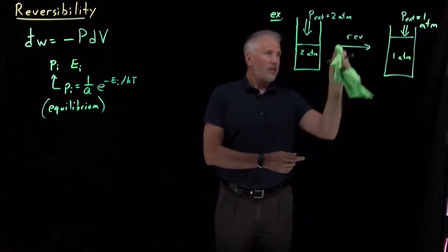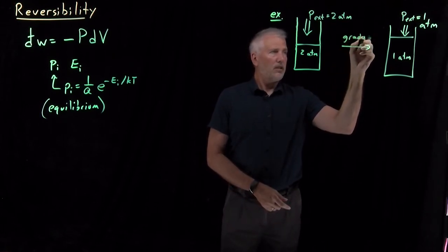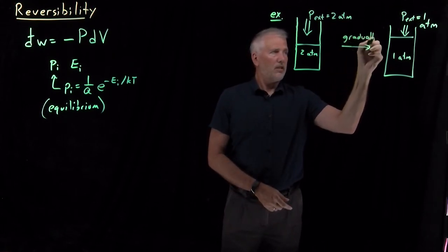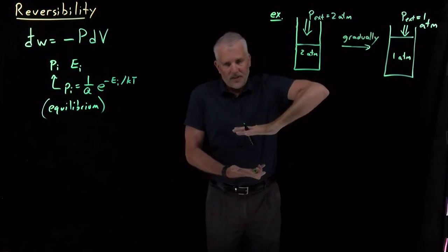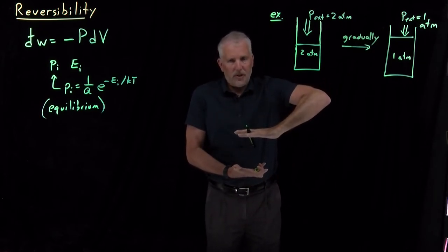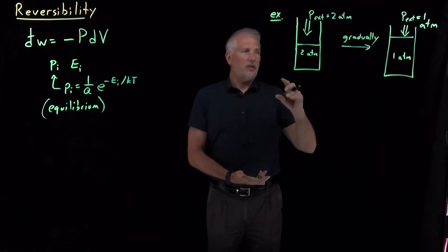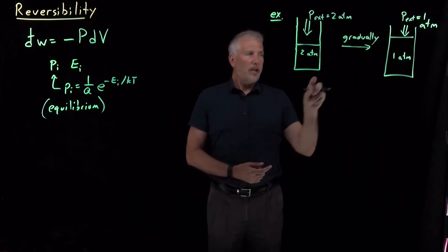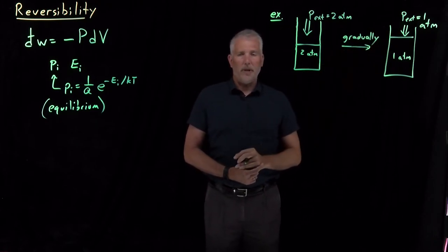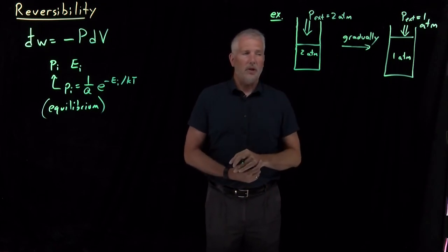Let's say that we do this reduction in pressure very gradually. The gas is compressed at an external pressure of two atmospheres, and we very slowly and gently release the pressure until it's only one atmosphere outside. As we do that, the volume of the box expands and the gas fills the larger volume.